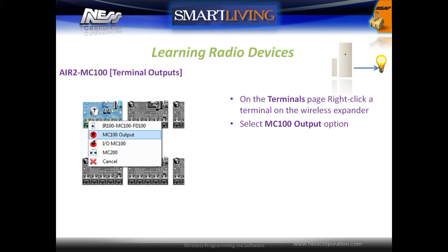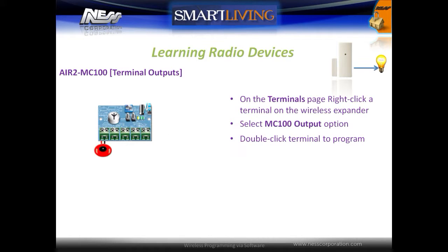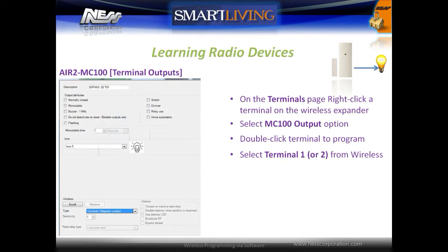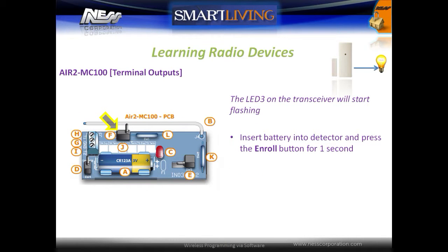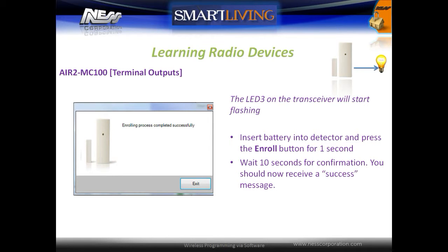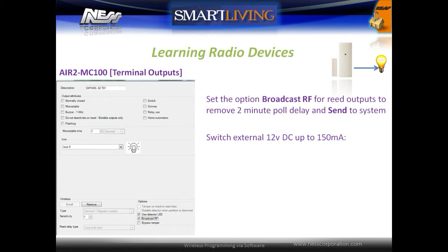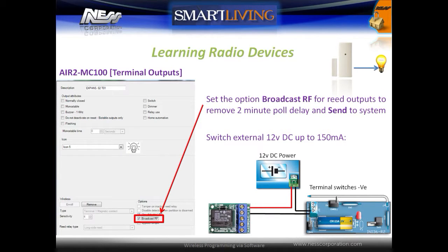To program the MC100's terminal as an output, right click on a wireless terminal and select the MC100 output option. Double click the terminal to open the configuration window. Select the required terminal 1 or 2 from the wireless programming section. Click the enroll button, the LED 3 on the transceiver will start to flash — insert the battery and press the enroll button. A confirmation message should be received after about 10 seconds. Select the broadcast RF option for any wireless output to ensure that it triggers immediately. Wireless outputs do not provide power — they can switch power from an external power source up to 150 milliamps, with the negative of the power supply feeding into the common of the terminals and switched through to the load.